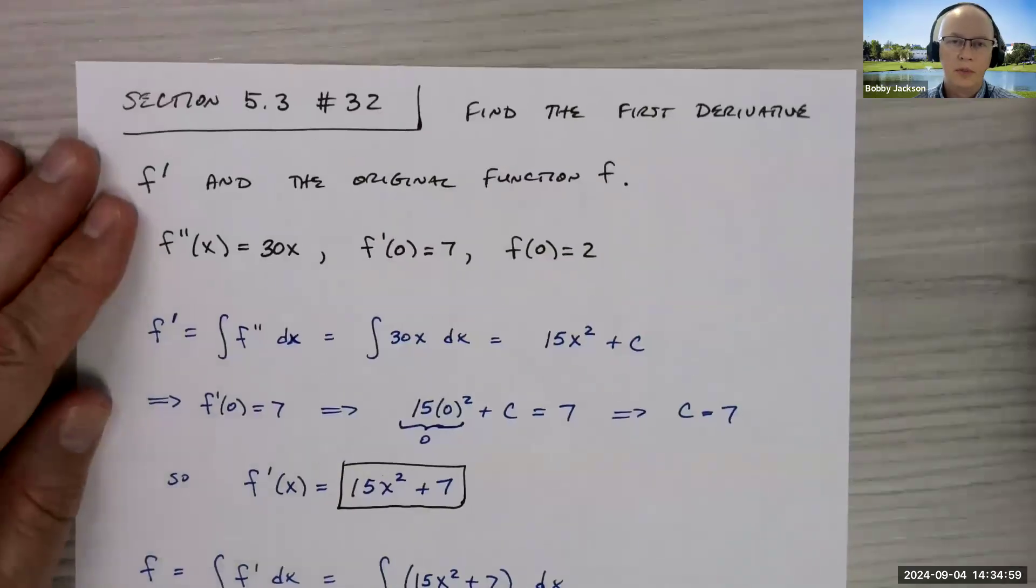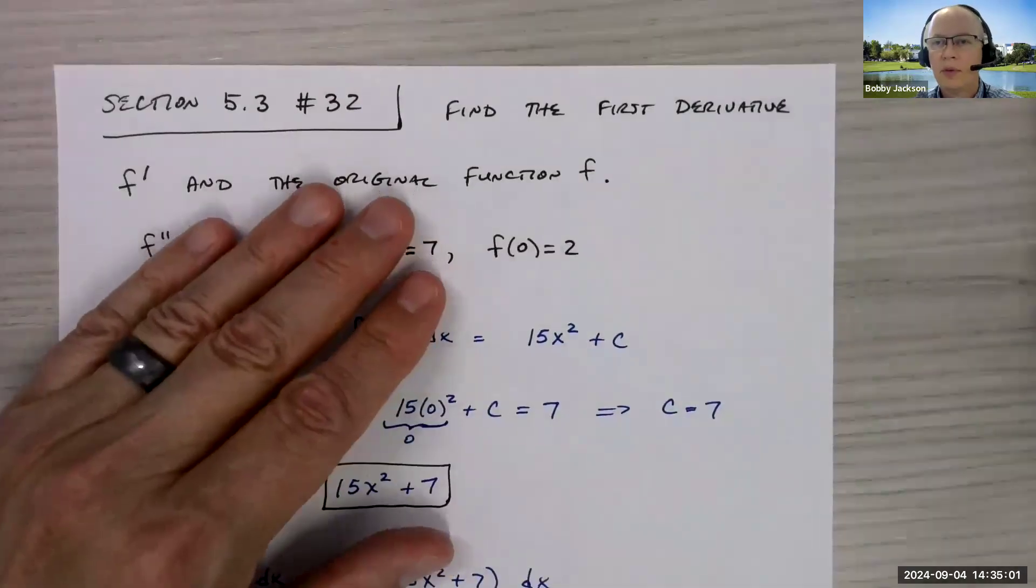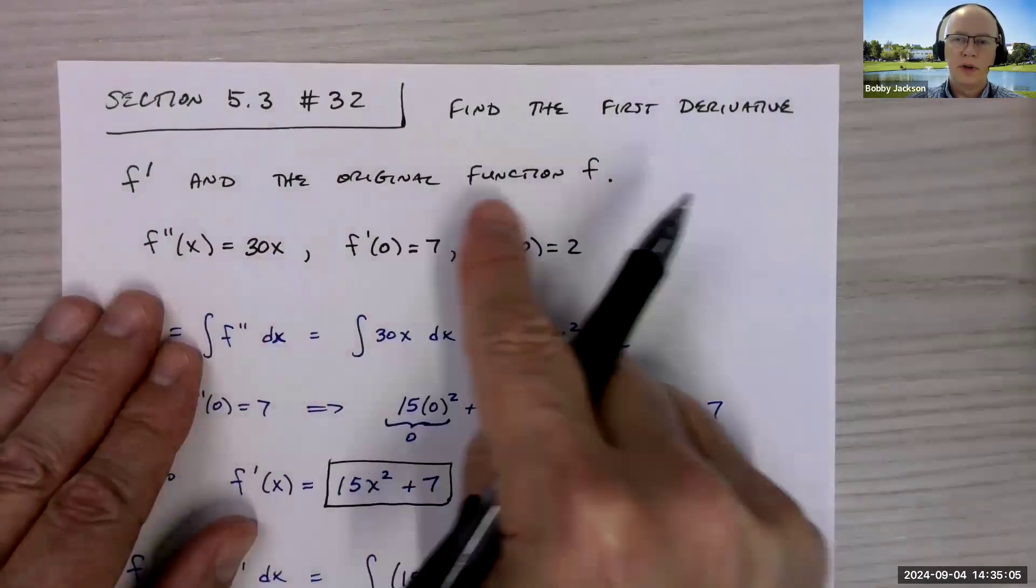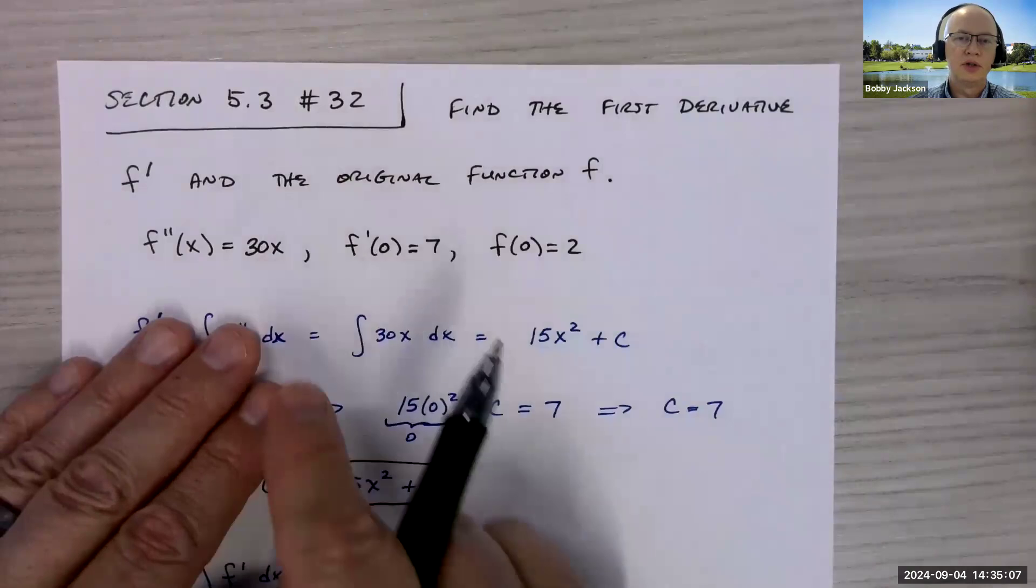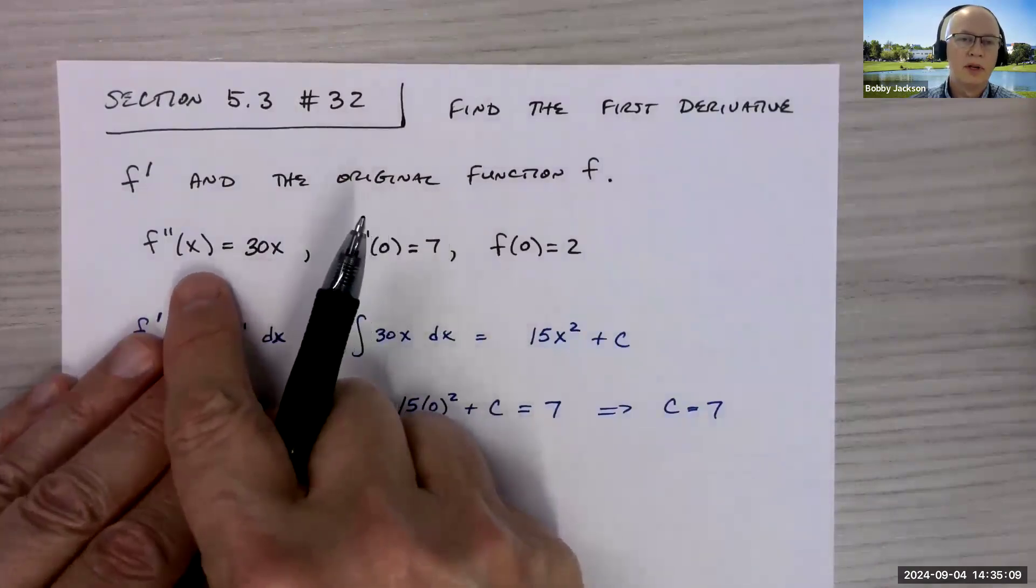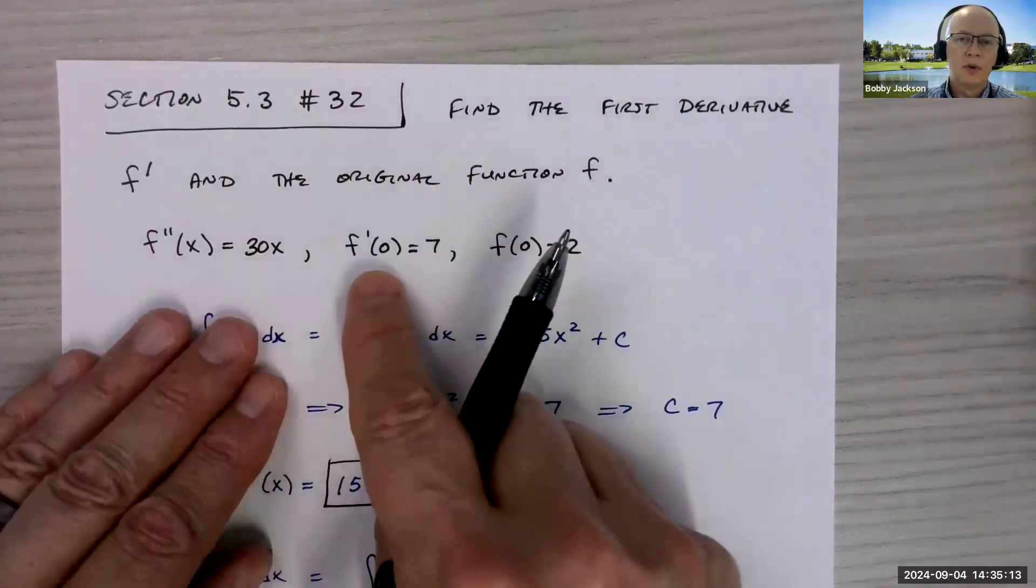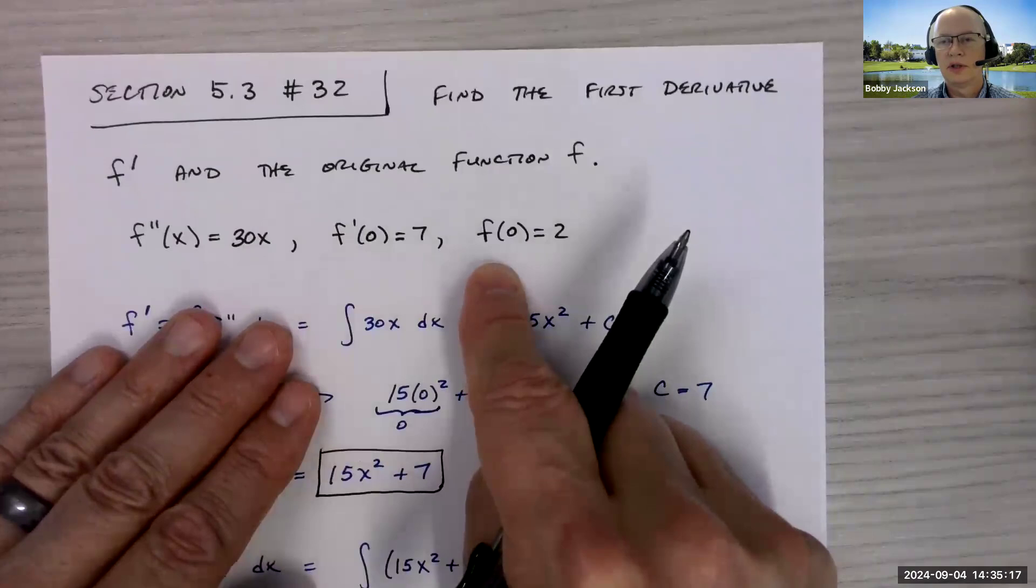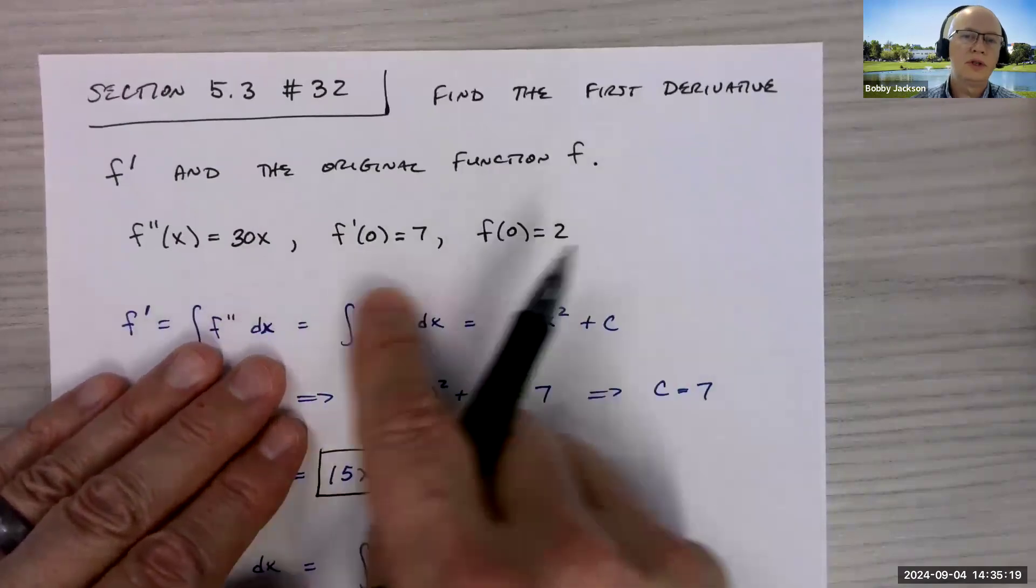Let's take a look at number 32 in section 5.3. We're gonna find the derivative f prime and the original function f for this initial value problem. So here we have second derivative of the function, it's 30x. We're given initial condition for the first derivative and initial condition for the function itself. So we're gonna work in two steps.